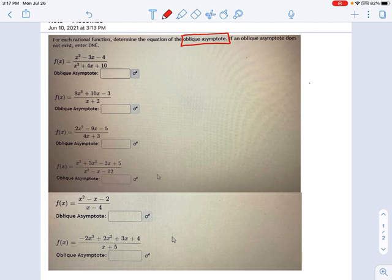Oblique asymptotes come from rationals which are top-heavy. What I mean by top-heavy, we've talked about this before, that's when the exponents on top are higher than the exponents on bottom.